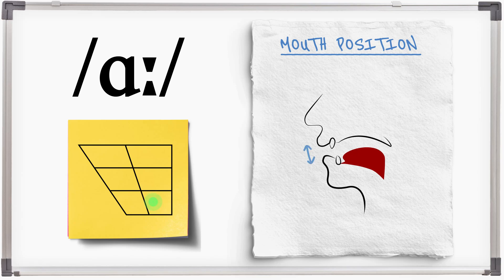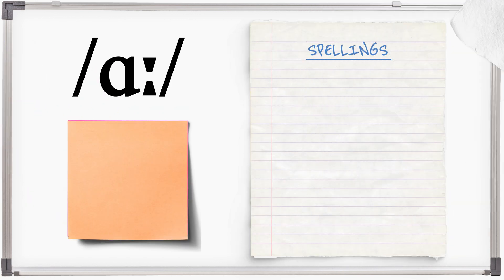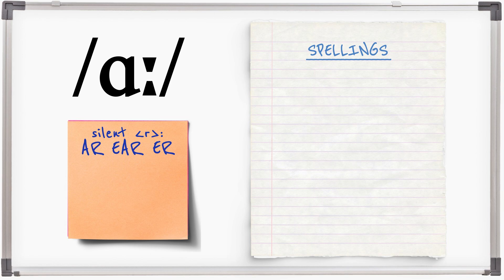R is an open sound made with the tongue slightly back and the lips unrounded. Lots of R spellings contain the letter R which is silent in GB English unless a vowel sound follows it.